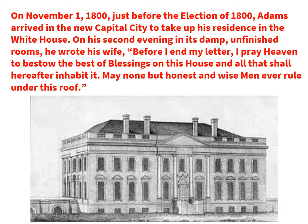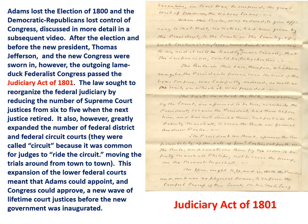On November 1st, 1800, just before the election of 1800, Adams arrived in the new capital city of Washington to take up residence in what was called the President's Mansion — not yet called the White House. On his second evening in its damp, unfinished rooms, he wrote to his wife: 'Before I end my letter, I pray heaven to bestow the best of blessings on this house, and all that shall hereafter inhabit it. May none but honest and wise men ever rule under this roof.'